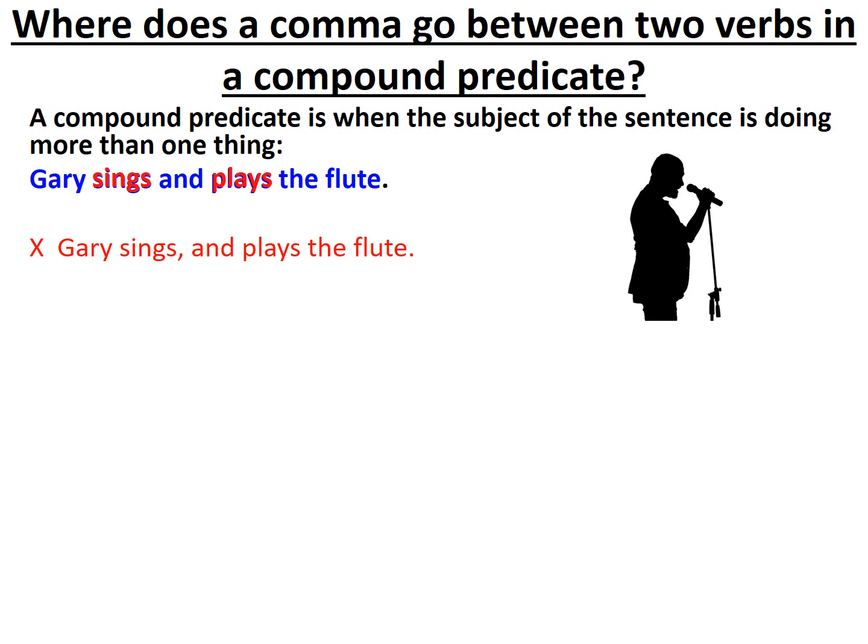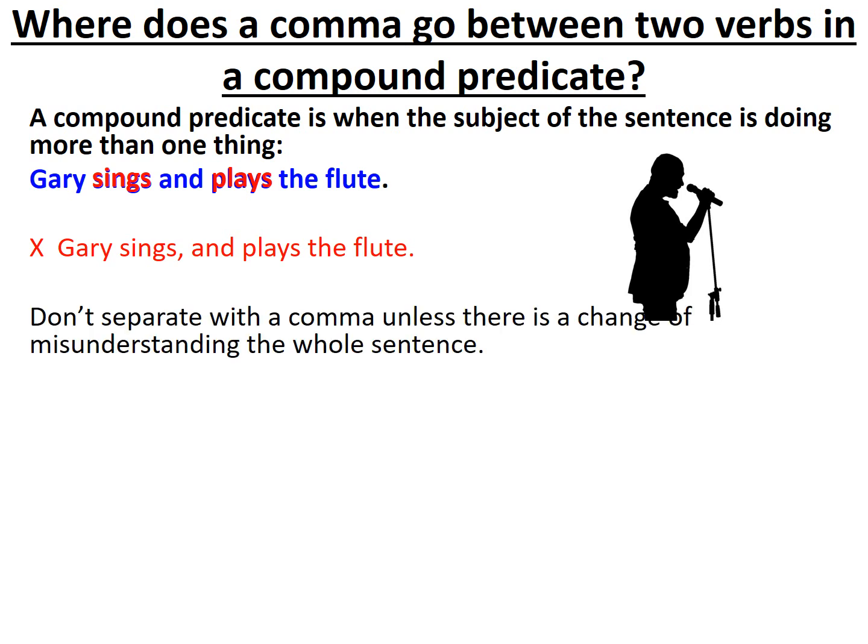The thing is, we don't need to separate either of these verbs unless there's a change of meaning or a complete misunderstanding of who is doing what in the sentence. Now let me give you an example where we need a comma to show who is doing what — each verb has been underlined.